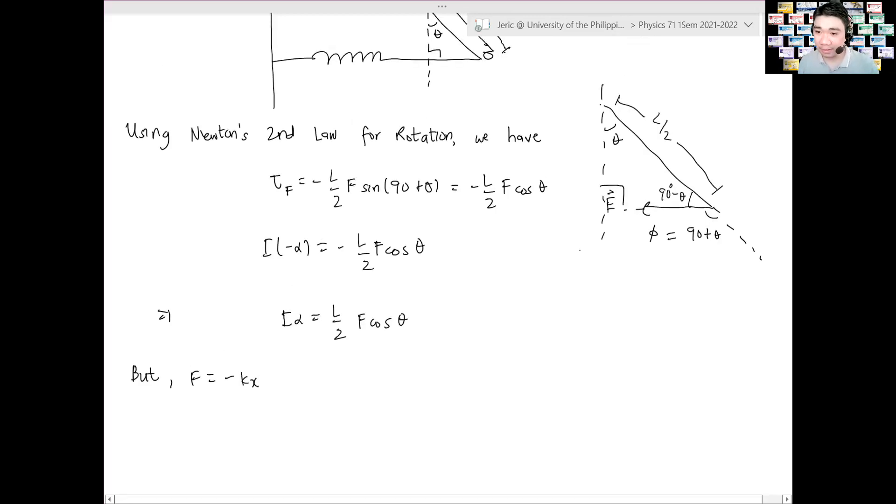This gives us I times minus alpha equals minus L over 2 F cosine theta. And hence, we haven't specified the force yet. It's just F for the meantime so we don't get confused. And therefore, I alpha equals L over 2 F cosine theta. Now, what is the nature of the force? Again, this is spring force. And the spring force is equal to what? But, F equals, what is it? Remember, this is Hooke's law. We assume it's a Hooke's law spring. And therefore, this is equal to negative KX, where X is the displacement, or I should say linear displacement of the spring from its equilibrium position.